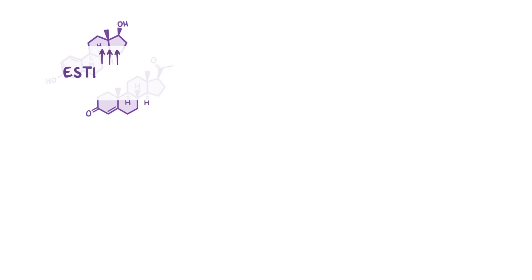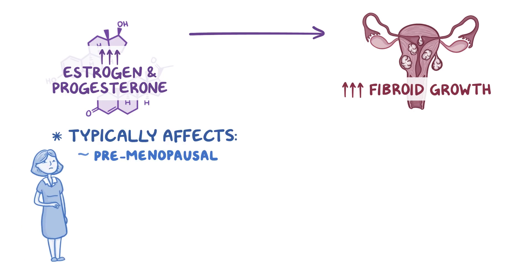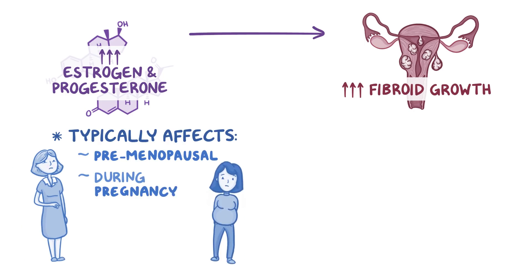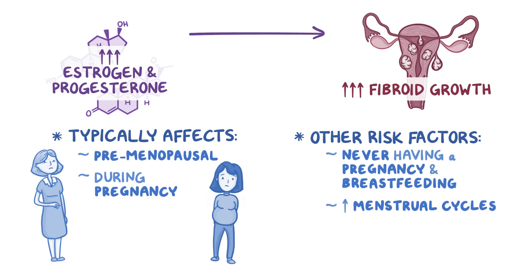So, the more estrogen and progesterone that are available, the more a fibroid is likely to grow. This is why fibroids typically affect premenopausal females, and why they grow rapidly during pregnancy, when there's a lot of estrogen around. Another risk factor for developing a fibroid is never having a pregnancy or breastfeeding, and having many menstrual cycles, each with a wave of hormones.